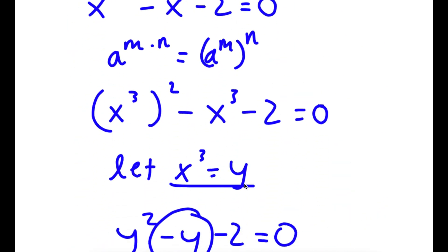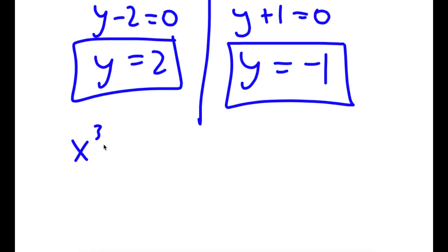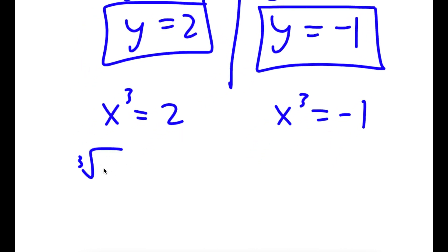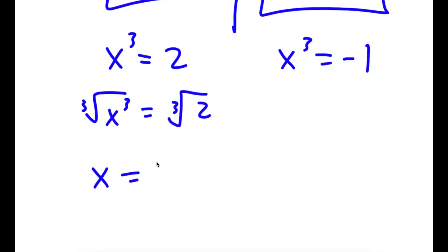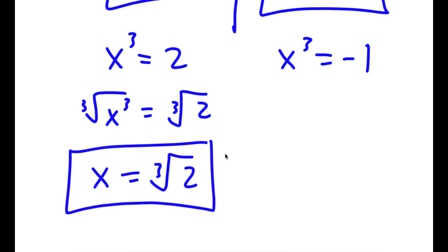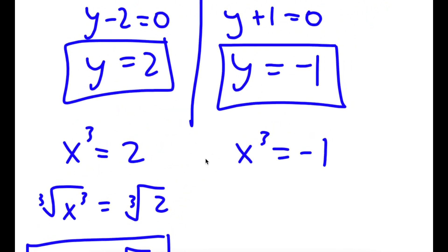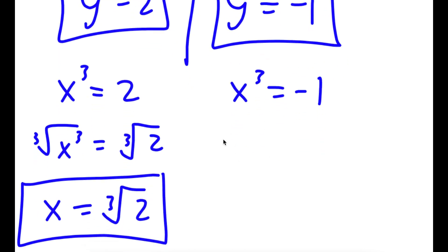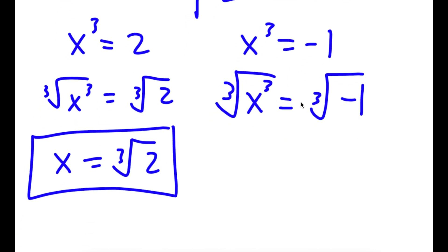This gives me two equations: y minus 2 equals 0, so y equals 2, and y plus 1 equals 0, so y equals negative 1. Remember we let x to the power of 3 equal y. So for y equals 2, I have x to the power of 3 is equal to 2 — taking the cube root on both sides gives x equals the cube root of 2. For y equals negative 1, x to the power of 3 equals negative 1, and the cube root of negative 1 is negative 1, so x equals negative 1.